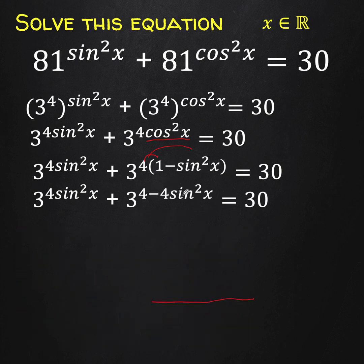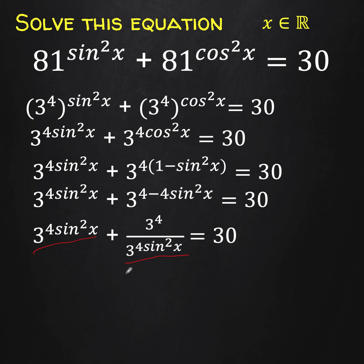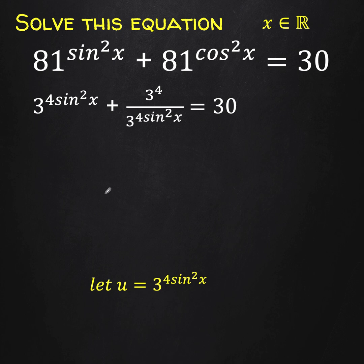This is an exponential form where the exponent is expressed as a difference. We can simplify that using the law of exponents: the base a raised to the difference m minus n equals the quotient a raised to m over a raised to n. So this is the result: this base raised to the 4th divided by the same base raised to 4 sine squared x. Notice that this part and this part are the same, so let's use variable substitution. We let u equal to 3 raised to 4 sine squared x.